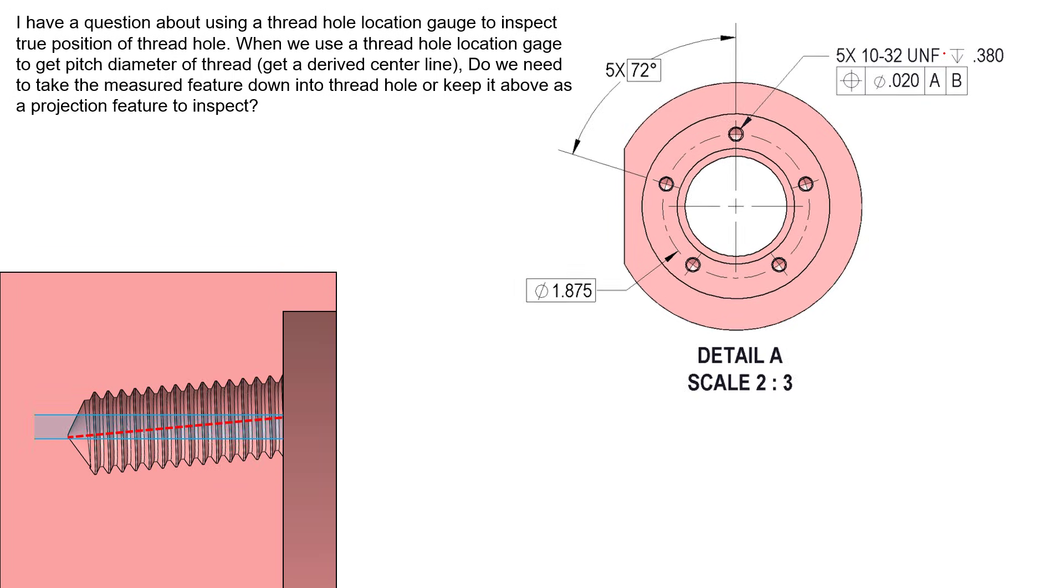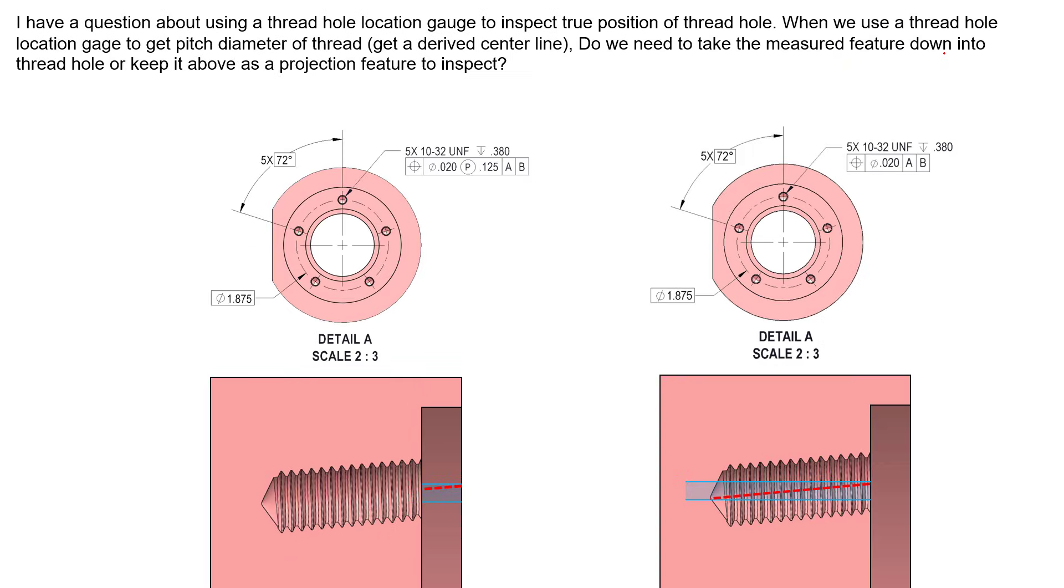We can see these compared side by side. If we have the projection symbol, we're supposed to control the axis of this feature as it's projected above the surface. So here's the axis. If we don't see the projection symbol, we're supposed to check the axis of the pitch cylinder diameter and have it be inside the material. In the inspection process, if you measure this axis here and you have this specification on the drawing, technically to be accurate to the standard, you're supposed to project it back into the material.